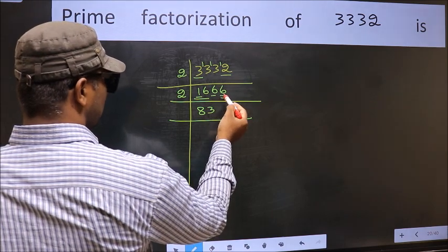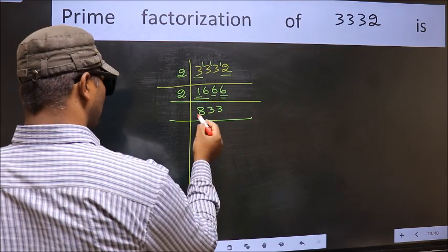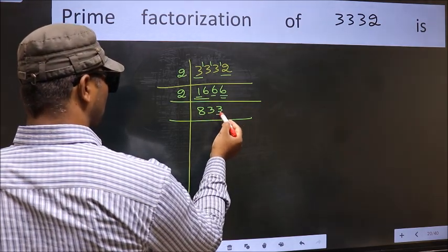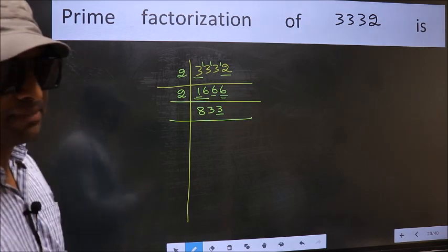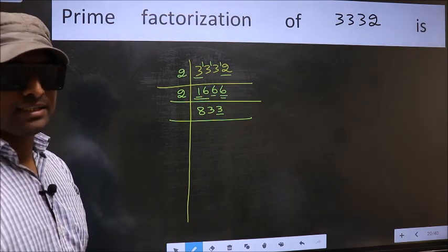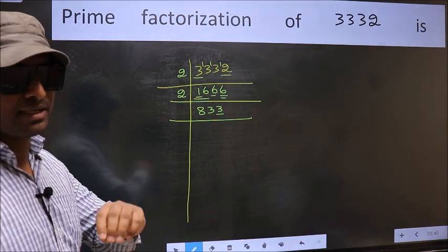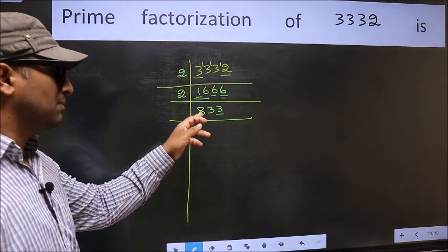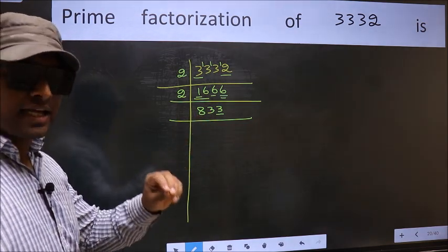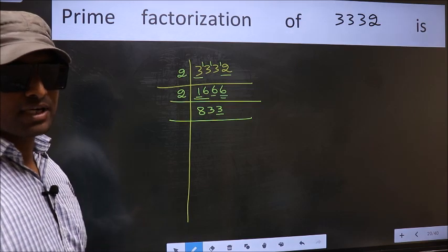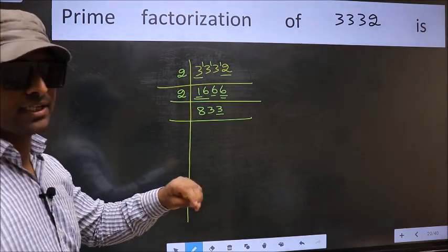The other number: 6. When do we get 6 in the 2 times table? 2 times 3 is 6. Now the last digit is 3, not even, so not divisible by 2. Next prime number: 3. To check divisibility by 3, we should add the digits. 8 plus 3 plus 3 equals 14, and 14 is not divisible by 3. So this number is also not divisible by 3.